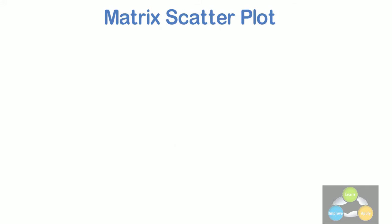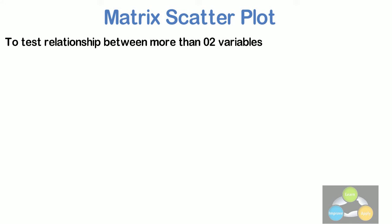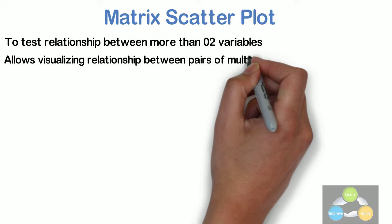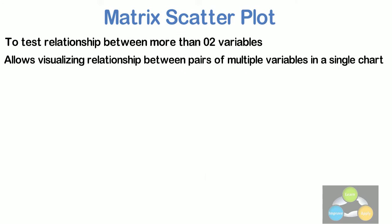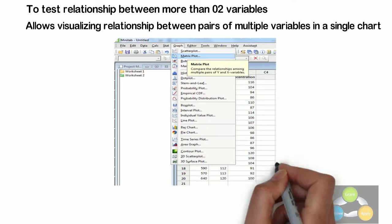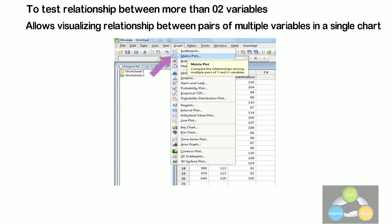Matrix scatter plot. This is used to test relationship between more than two variables. Many software supports matrix scatter plot which allows visualizing relationship between pairs of multiple variables in a single chart. In Minitab, procedure for drawing matrix scatter plot is similar to the scatter plot. Only change is, you have to select a matrix plot option instead of scatter plot option.